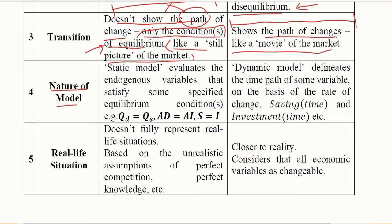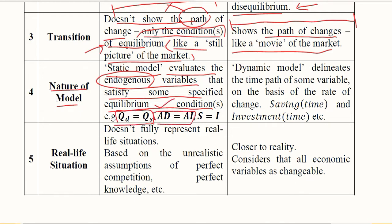The fourth ground is the nature of the model. The static model evaluates the endogenous variables — the variables determined within the equation or model — and they satisfy some specified equilibrium condition, whether market equilibrium or macroeconomic equilibrium using AD-AS or saving and investment. All such equilibria we have studied before were static in nature.